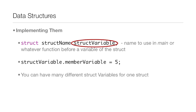To implement a struct and get access to those variables in other parts of your code, in whatever function you need those variables, you say 'struct' then the struct name, then a struct variable name — which can be anything, different from the actual struct name. Access a member with: struct variable dot member variable equals five. You can have many different struct variables for one struct, giving you access to the same variables from two different places.